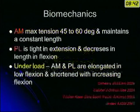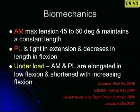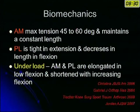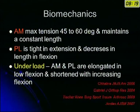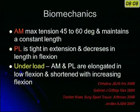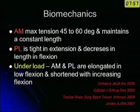There are a lot of biomechanical aspects studied about the ACL. When considering the ACL as two bundles, the anteromedial bundle has maximum tension at about 45 to 60 degrees and has a constant length throughout the range of motion. The posterolateral bundle is tight in extension and decreases in length as the knee goes into further flexion — this is when you examine the knee without load. But when the knee is loaded, both the AM and PL bundles are elongated in low flexion and get shortened with increasing flexion. So you should understand that the PL bundle behaves differently with load versus without load.